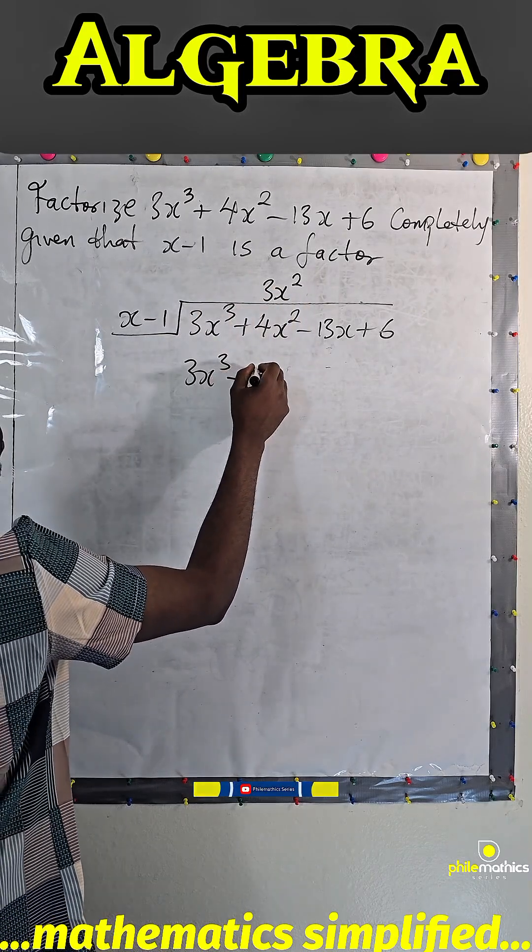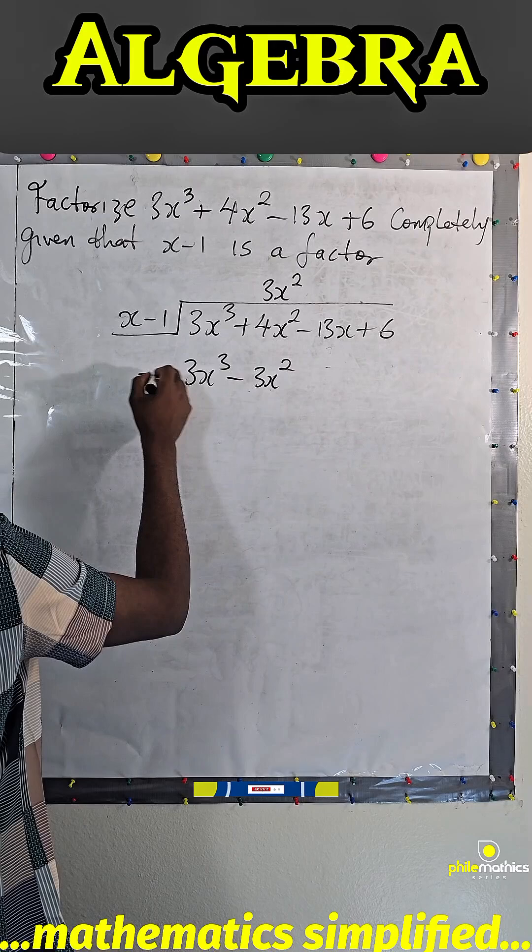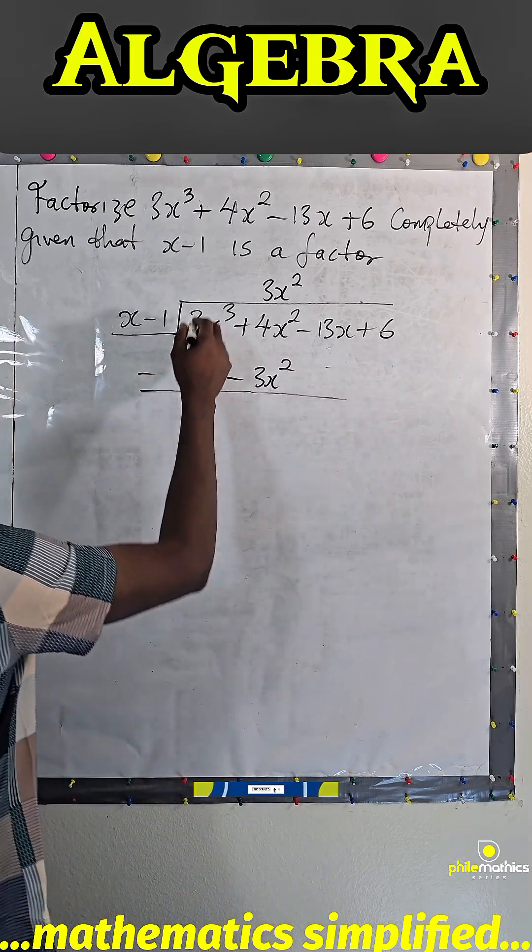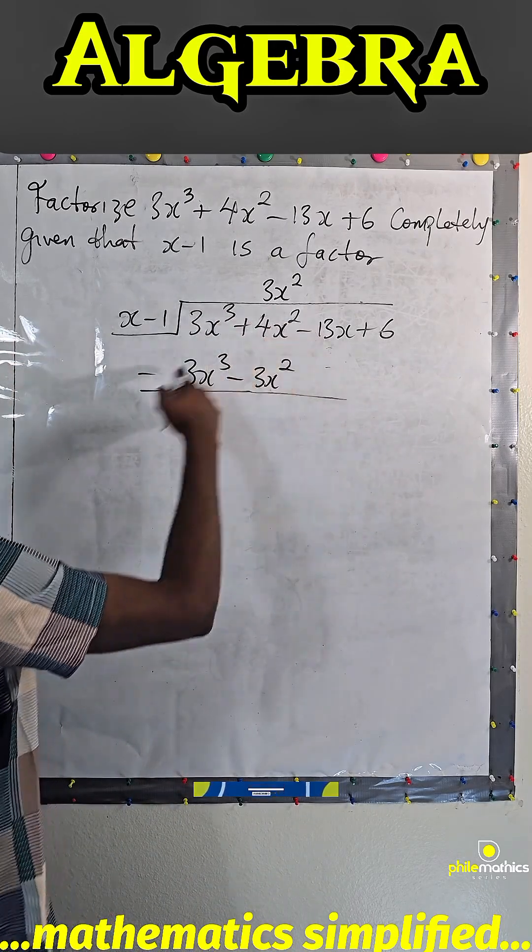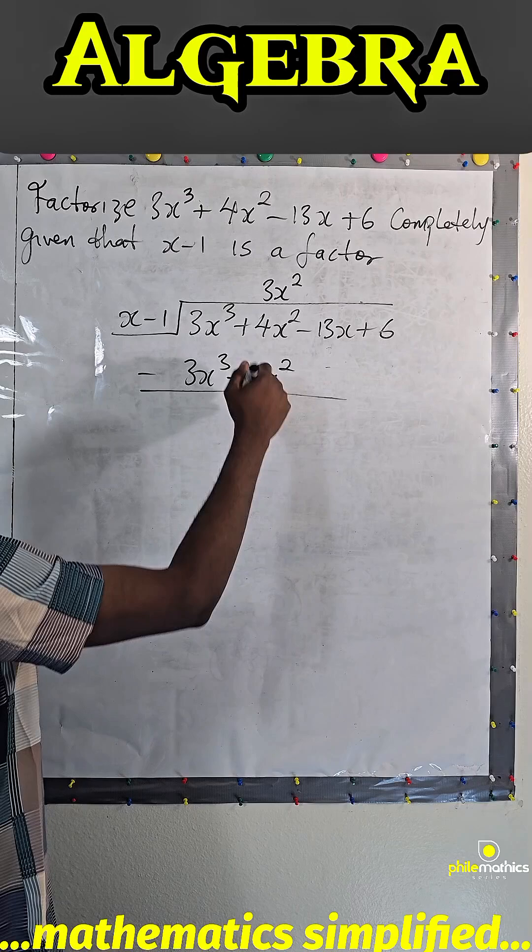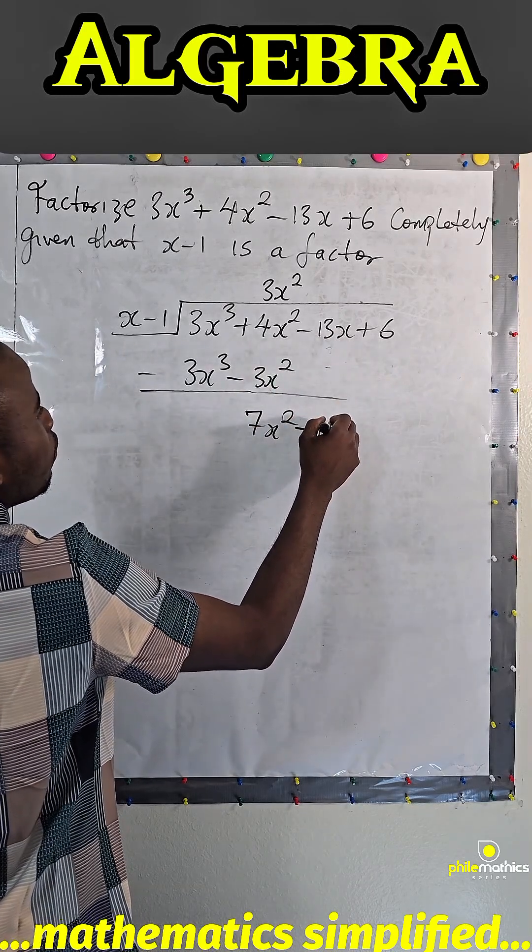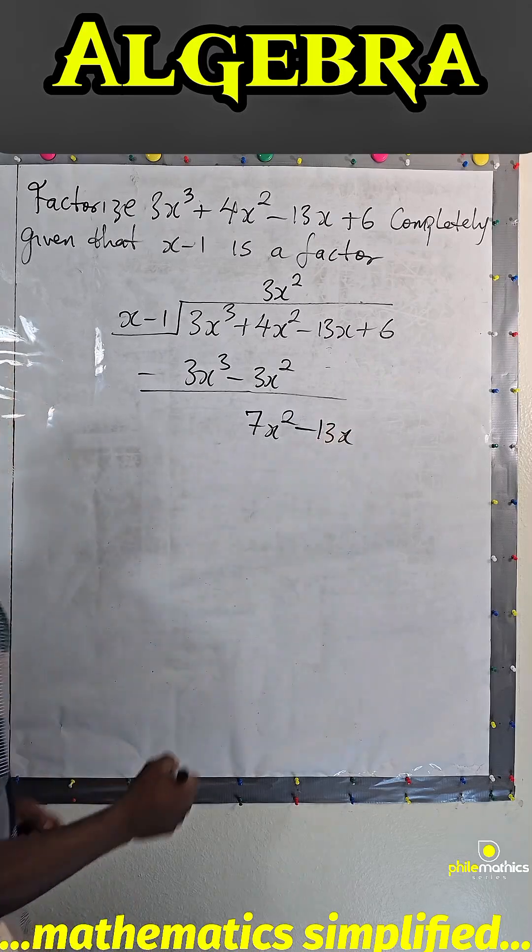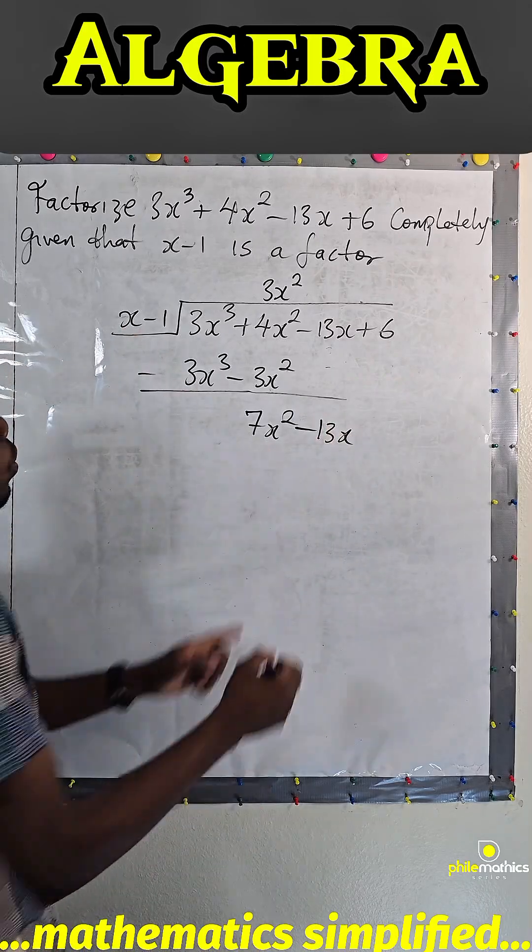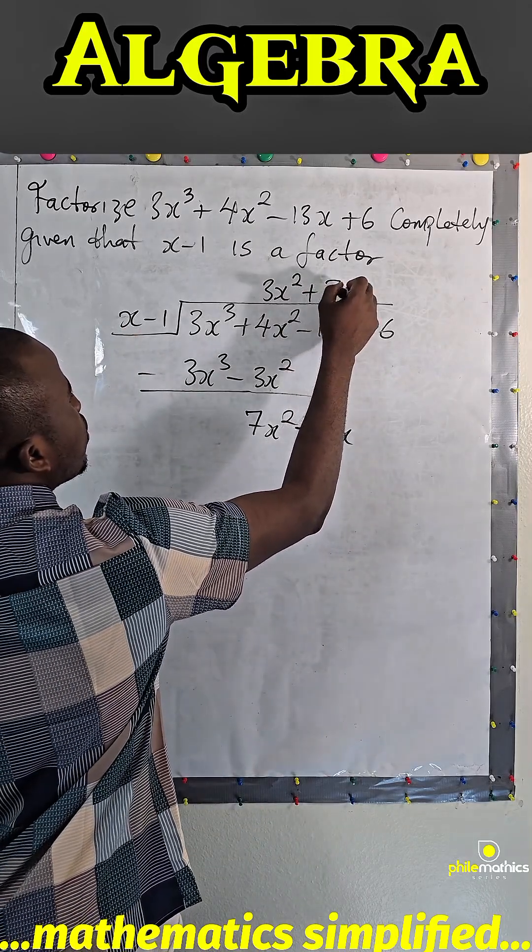So we subtract, this is 0. 4x² minus minus is plus, plus 3x² is 7x². We bring the next factor down. So x into 7x² is plus 7x.